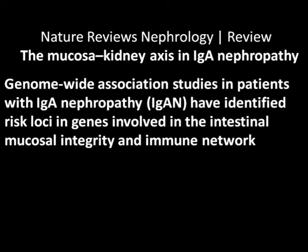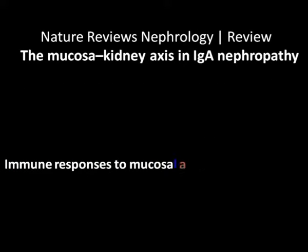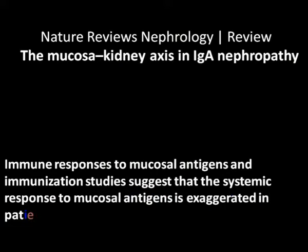Genome-wide association (GWA) studies in patients with IgA nephropathy have identified risk loci in genes involved in intestinal mucosal integrity and immune networks. These GWA studies conducted across many years in populations from China, India, Africa, and elsewhere show how the immune system and the intestine have evolved. Immunization studies suggest that the systemic response to mucosal antigen challenge is exaggerated in patients with IgA nephropathy.